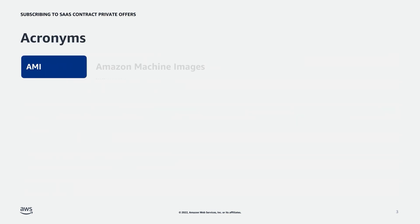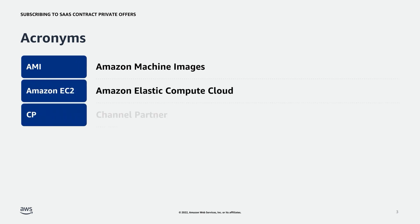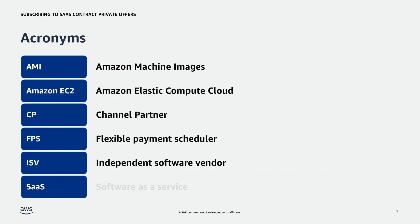To start, let's go over important acronyms related to this program. AMI stands for Amazon Machine Image. Amazon EC2 stands for Amazon Elastic Compute Cloud. CP stands for Channel Partner. FPS stands for Flexible Payment Scheduler. ISV stands for Independent Software Vendor, and SaaS stands for Software as a Service. ISVs and Channel Partners are the most common types of partners to list in AWS Marketplace. In this presentation, when we refer to AWS Partners or Sellers, we are referring to either of these parties.